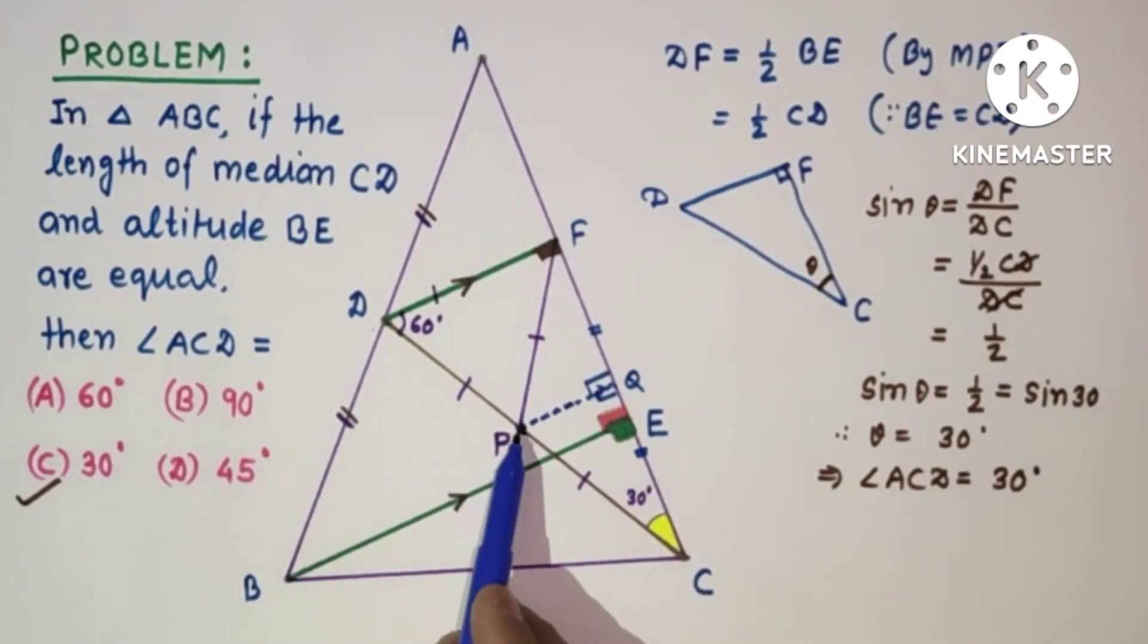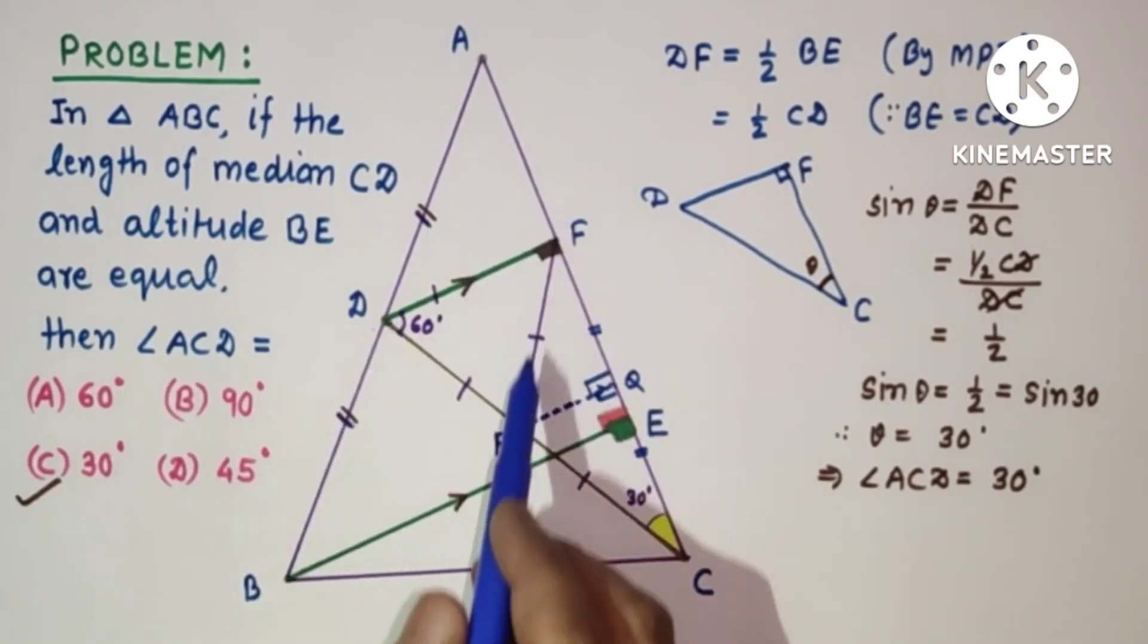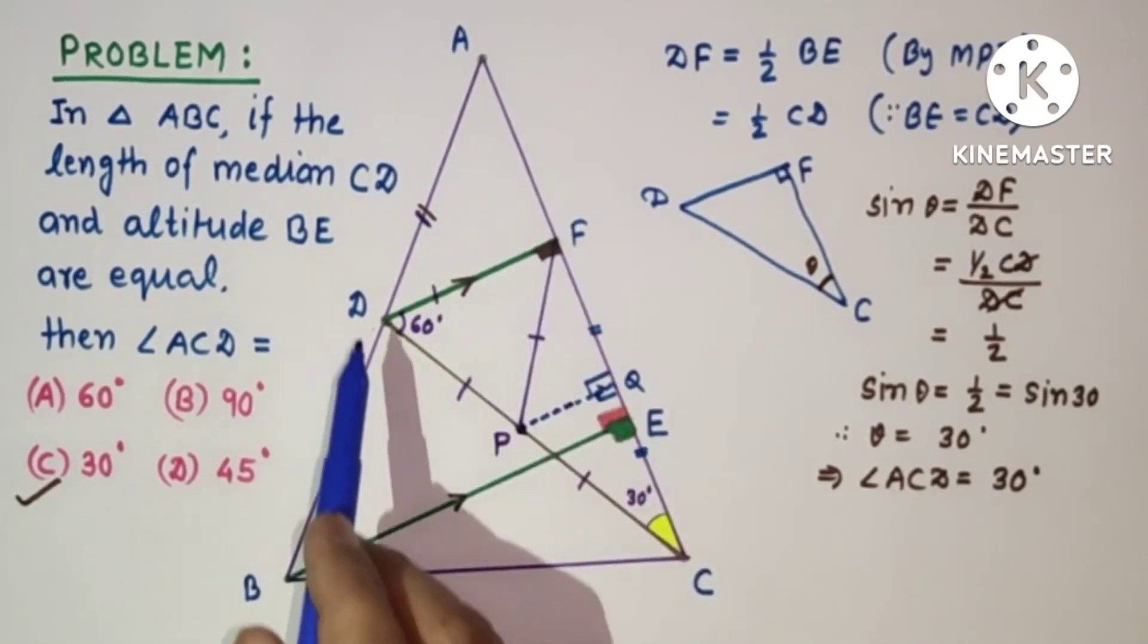And then we can say that PC is equal to PF. So PC is equal to PF and PC is equal to PD, and DF is half of DC. Therefore it will be an equilateral triangle once again.